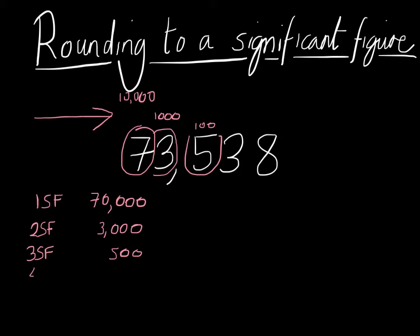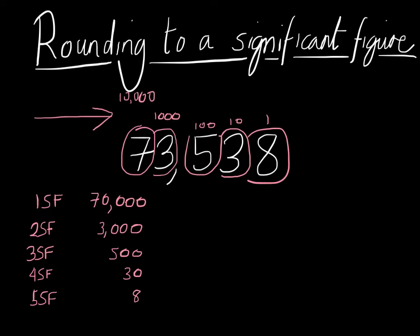The fourth significant figure is in the tens column, and there are three of them, so it represents 30. The fifth significant figure is in the units column, and it represents 8. So: the first significant figure is the ten-thousands column, the second is the thousands column, the third is the hundreds column, the fourth is the tens column, and the fifth is the units column.